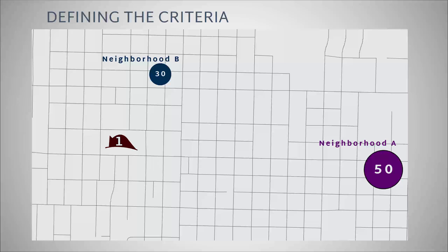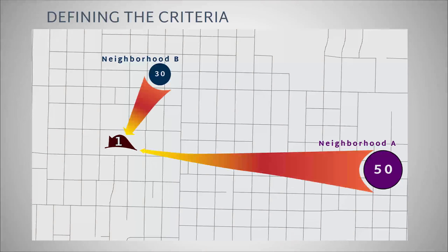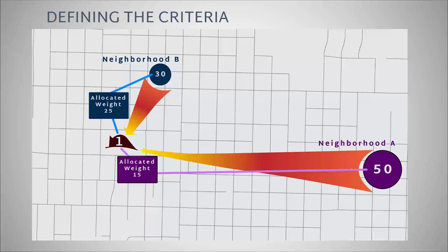Demand weight can decay with distance, so that as demand points land farther from a facility, less weight is allocated from that point. For example, let's say that neighborhood A has a higher volume of calls than neighborhood B, and we want to allocate demand for these two points to the Arcata fire station. If distance was not a factor, neighborhood A would allocate a greater demand weight to the Arcata fire station than neighborhood B. However, if we determined that demand weight decayed with distance, neighborhood A might allocate less demand weight than neighborhood B if it is farther away from the Arcata fire station. And if neighborhood A is beyond the five-minute impedance cutoff window, it won't have any weight at all. The best location for a fire station would be the one with the most allocated demand weight.